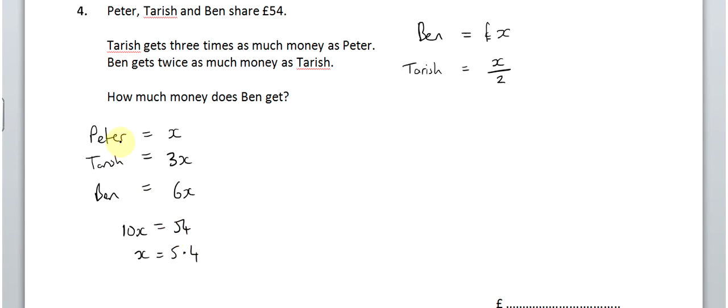Ben gets 6 times it. 6 times 5.4. And, 6 times 5.4 is equal to 32.4. So, Ben gets 32.4. Tarish gets three lots of 5.4. And, 3 lots of 5.4 is half of that, which is 16.2. And, of course, we said Peter gets 5.4. And, if we add those up, so 32.4 and 5.4, you'll see that it adds up to 54. So, the answer is 32.4.